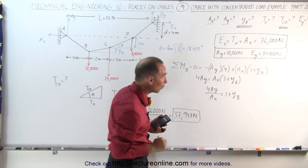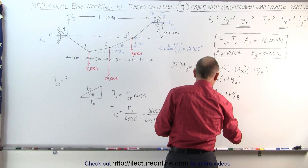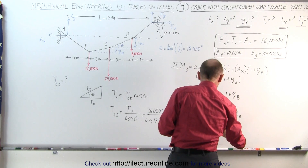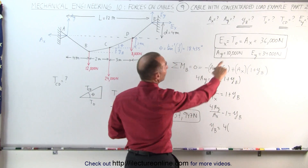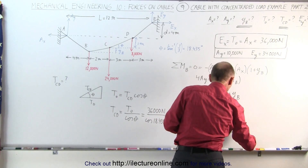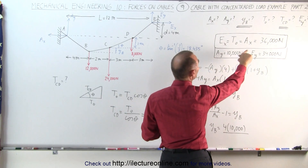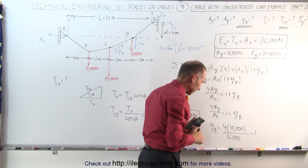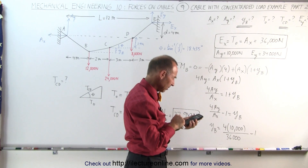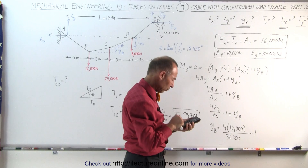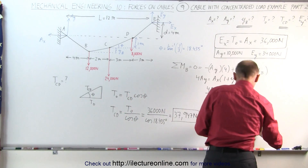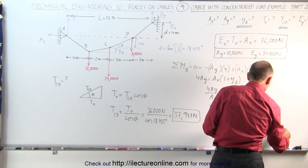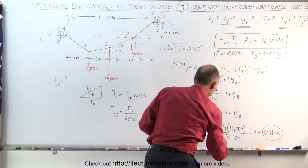Solving the equation: 4·A sub-y equals A sub-x times (1 + y sub-b). Dividing both sides by A sub-x gives 4·A sub-y / A sub-x equals 1 + y sub-b. Subtracting 1 from both sides: y sub-b equals 4 × 10,000 / 36,000 − 1, which gives 40,000 / 36,000 − 1 = 0.11 meters, so 11 centimeters.